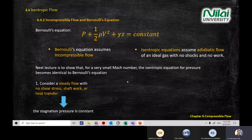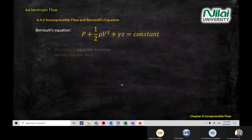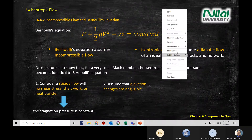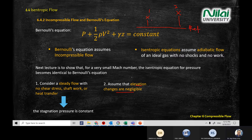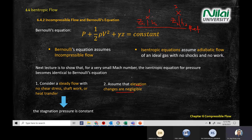First, we have a steady flow. Second, there is very small elevation change in the system. When you use Bernoulli equation, you are comparing two locations — location one and location two. Elevation is the height from the reference point, h1 and h2, or in this module we use z1 and z2. In this case, the change of elevation is very, very small — delta z equals zero, or delta h is nearly zero.